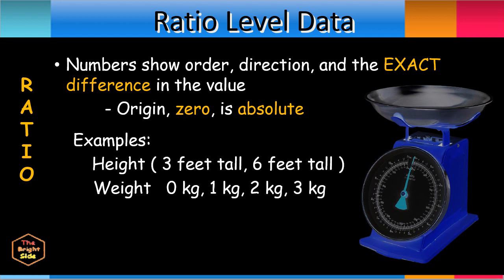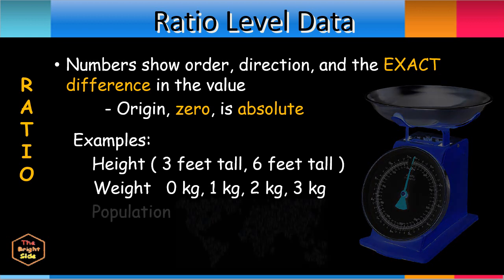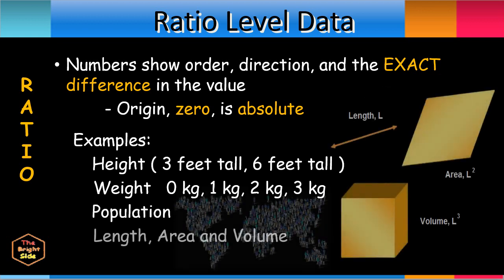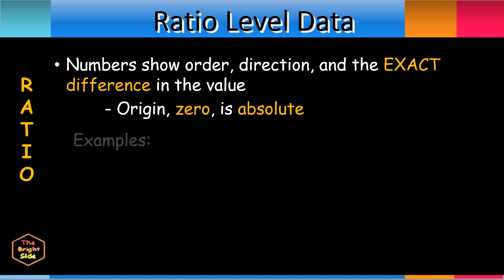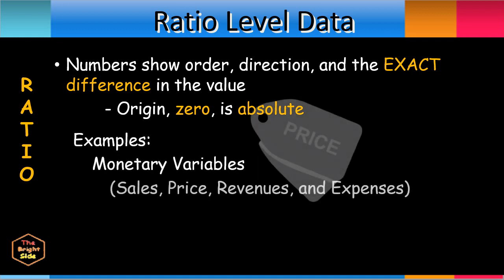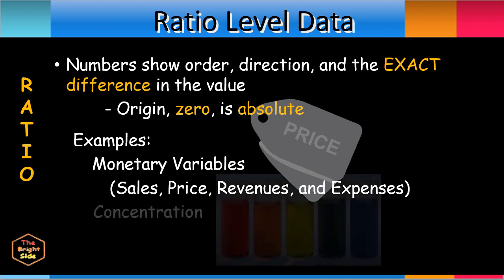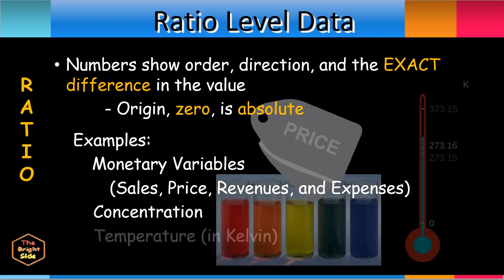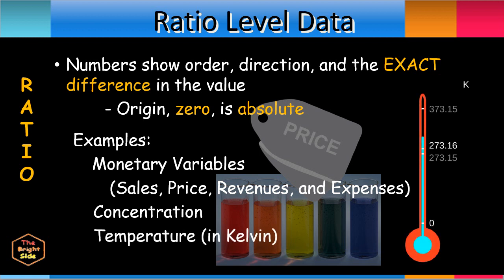Other examples of ratio variables are population, length, area, and volume. Monetary variables such as sales, price, revenues, and expenses are also examples of ratio variables. Concentration and temperature in Kelvin also give ratio level data.